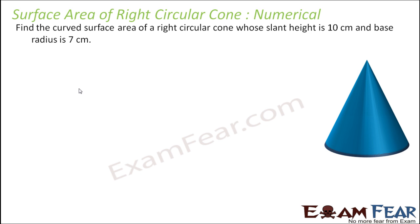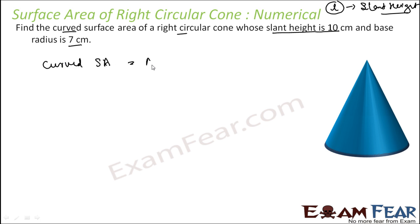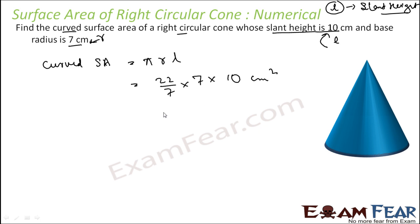Now let's take some numericals to understand the concept. Here l is the slant height. Question: the curved surface area of a right circular cone has slant height 10 and base radius 7. Find the curved surface area. Curved surface area equals πrl. Substituting: 22/7 times 7 times 10, which gives 220 cm².